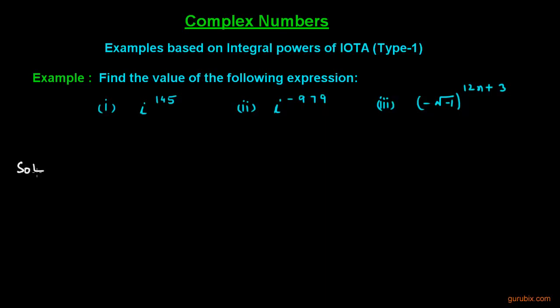So let us start with part 1. In part 1, we are given iota raised to 145 and we have to calculate it.